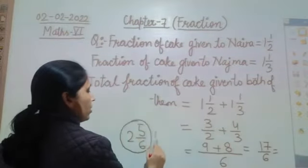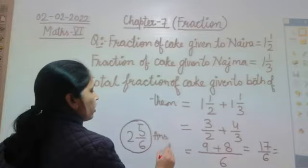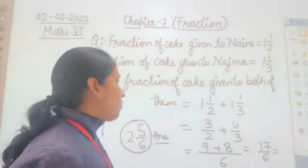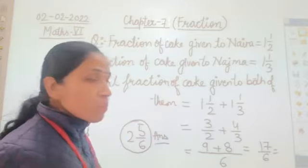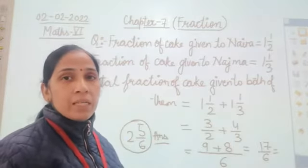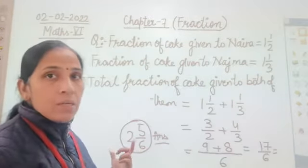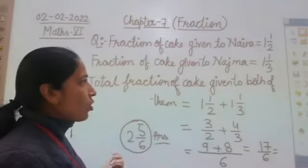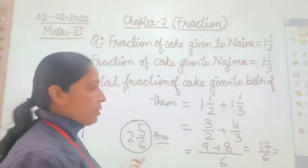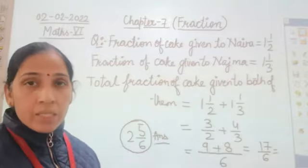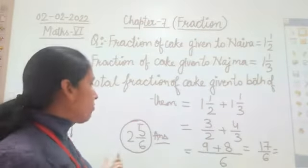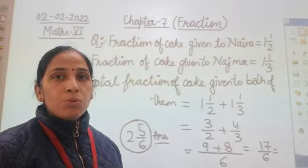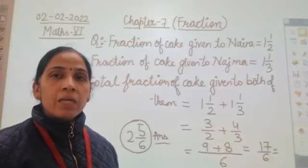So 2 and 5/6 is the total fraction of cake given to both of them. Therefore, total fraction of cake given to both of them is 2 and 5/6.